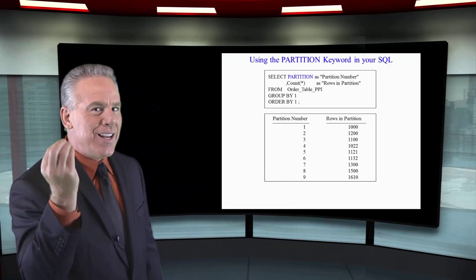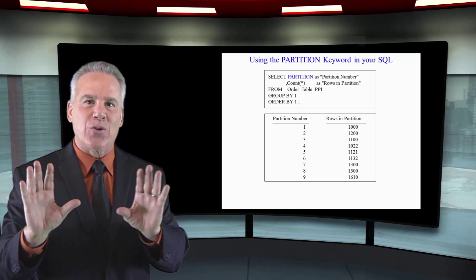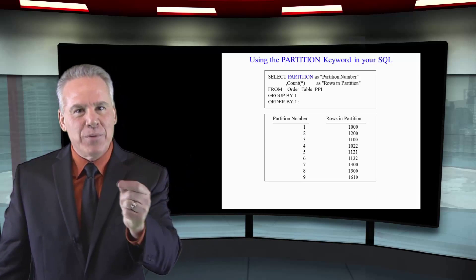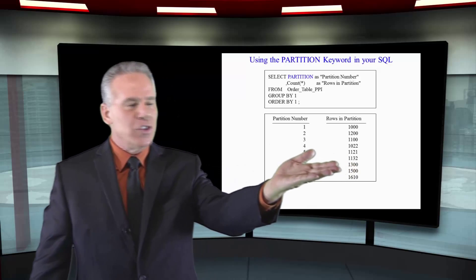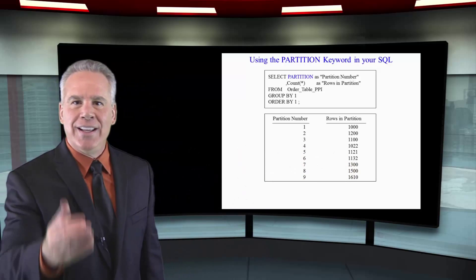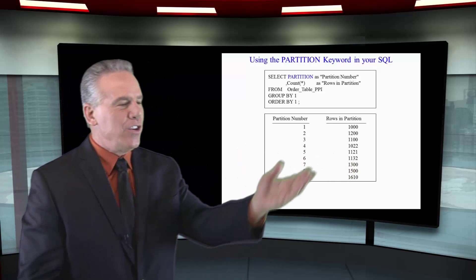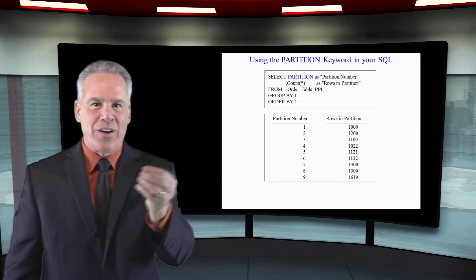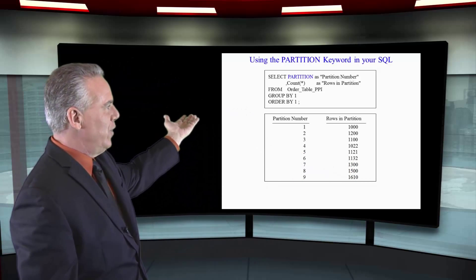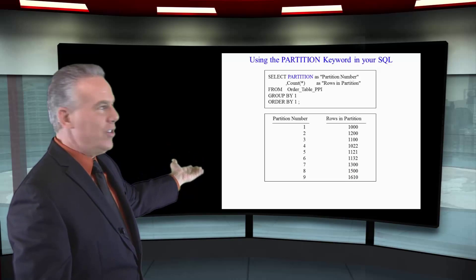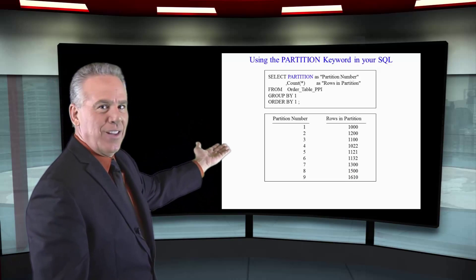Not that you need to know this when you're just a user querying, but you're going to be able to see this as the DBA. And you run this query, select partition. It's a keyword. You're counting the rows in these partitions and you'll get a good view of the partitions and the rows in those partitions.